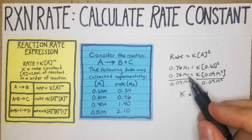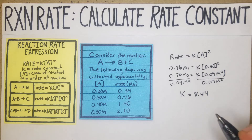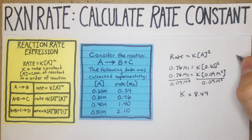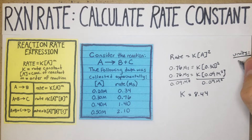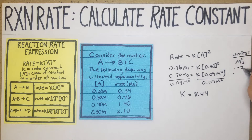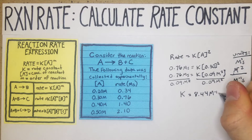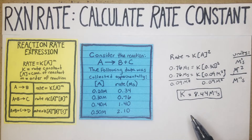Now for the units: we have M/s divided by M², so essentially M/s over M squared. Subtracting the exponents, we have 1 minus 2, which gives us M⁻¹·s. So our units for K here are M⁻¹·s.